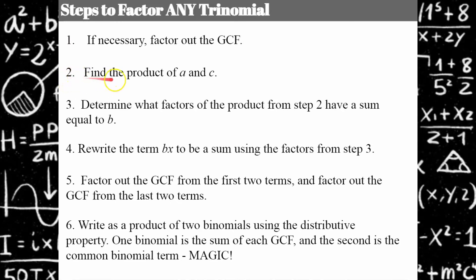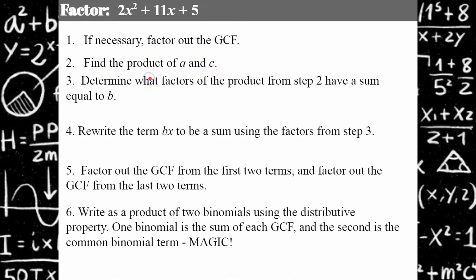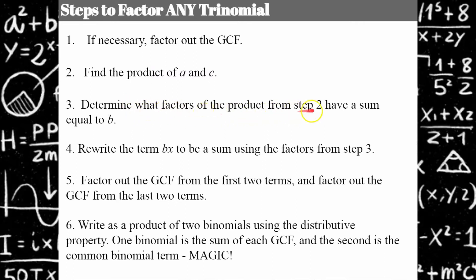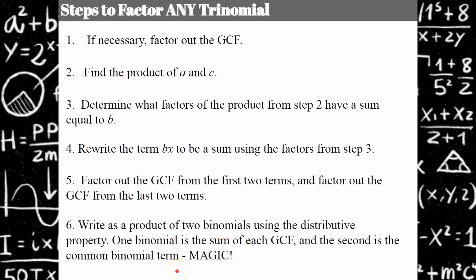Step two: find the product of A times C. Step three: determine what factors of that product have a sum equal to B. Step four: rewrite the middle BX term as the sum using those factors from step three. Step five: factor out the GCF from the first two terms and from the last two terms. Step six is where the magic happens — write the product of two binomials using the distributive property: one binomial is the sum of each GCF and the second is the common binomial term.